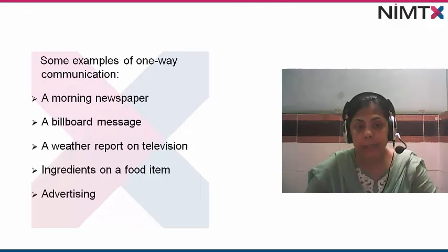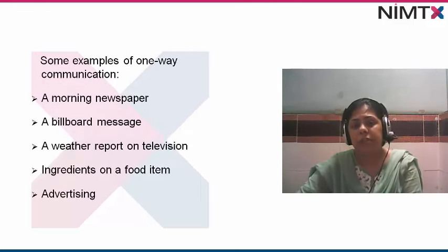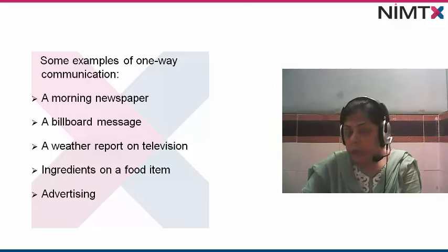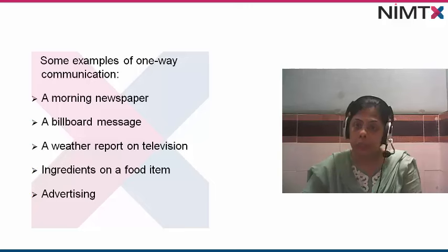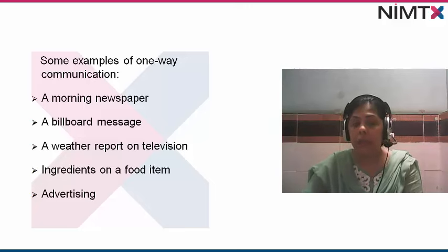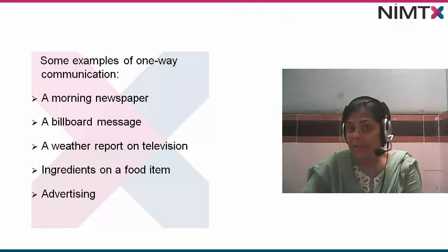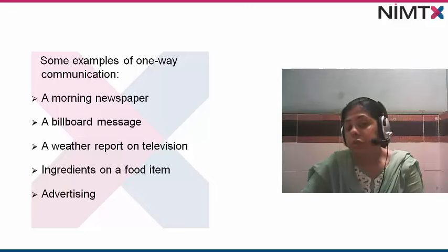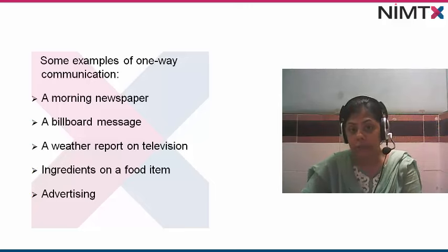What are some of the examples of one-way communication? It can be a morning newspaper — you receive a newspaper, you read it, and that's it. You cannot give feedback. Sometimes we see there is a spelling mistake in some of the articles and we cannot give a feedback. So that is a one-way communication; they are communicating to you but there is no feedback that can be given.